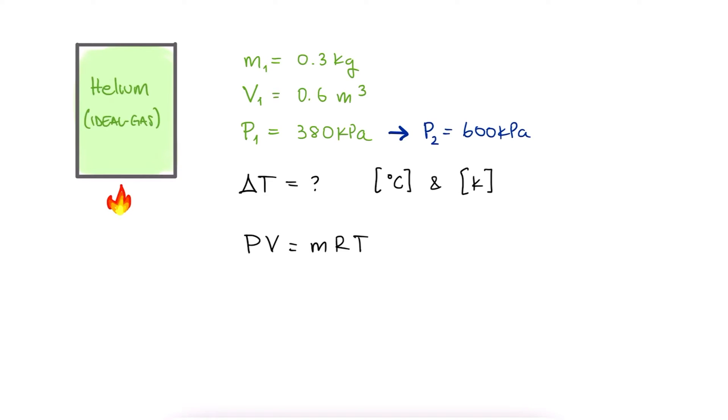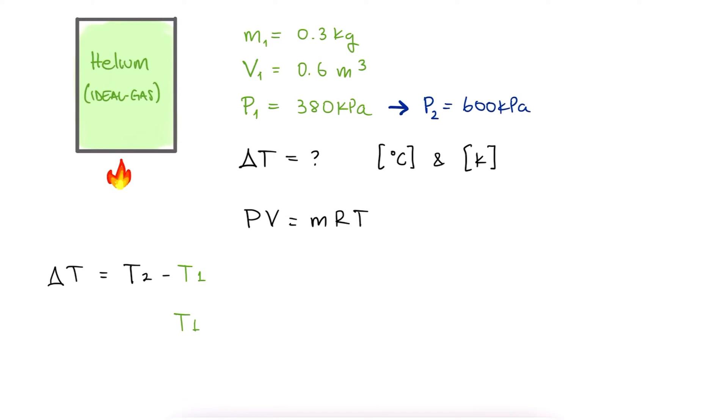To find the change in temperature, we'll need the initial temperature and the final temperature. The initial temperature, using the ideal gas equation, is PV over MR.